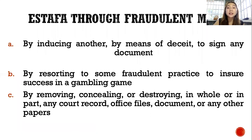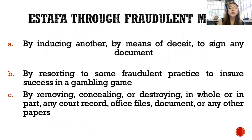The last kind of estafa is estafa through fraudulent means. There are three punishable acts: one is by inducing another by means of deceit to sign any document; another is by resorting to some fraudulent practice to ensure success in a gambling game; and lastly, by removing, concealing, or destroying in whole or in part any court record, office files, document, or any other papers.